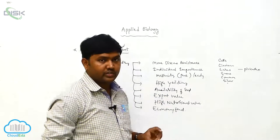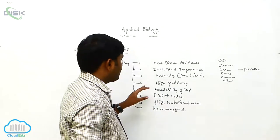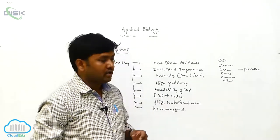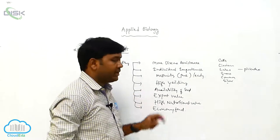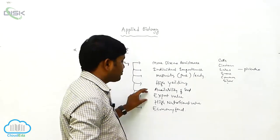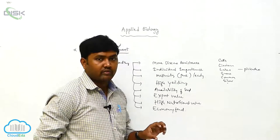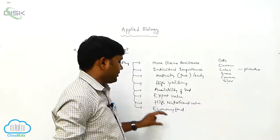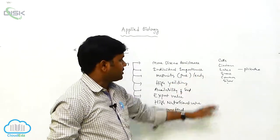The growth and health and hygienic conditions are very well, and next, high yielding capacity. The production level is very high, so that is one of the characteristics, availability of the seed, and next, export value and high nutritional value.